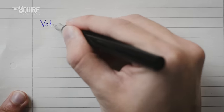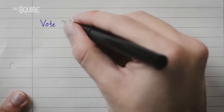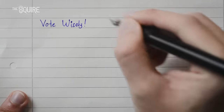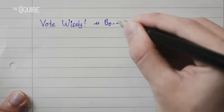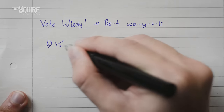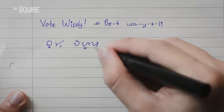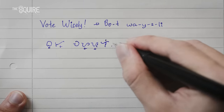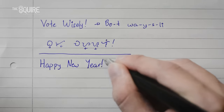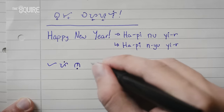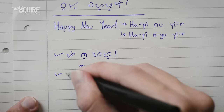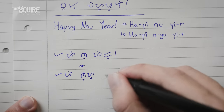How about two English phrases? 'Vote wisely' — which you would write as you would say it in Filipino: bo-t-wa-i-s-li. And finally, 'happy new year': ha-pi-nu-yir, or ha-pi-nu-yir. There are two variations in this case.